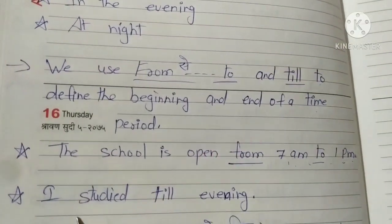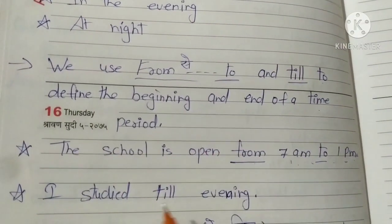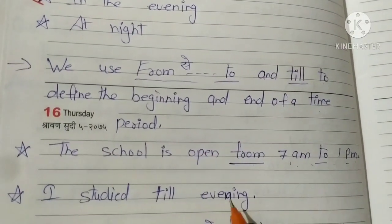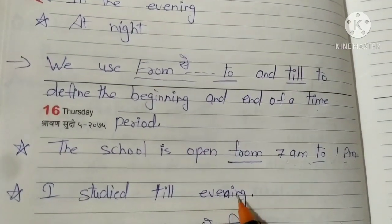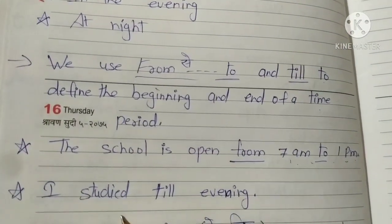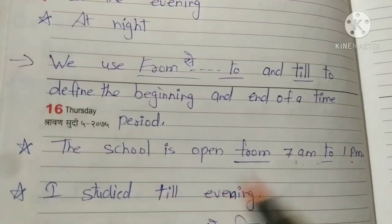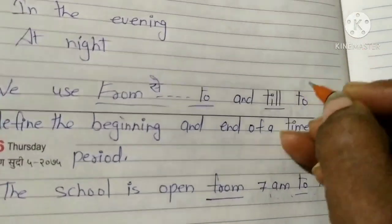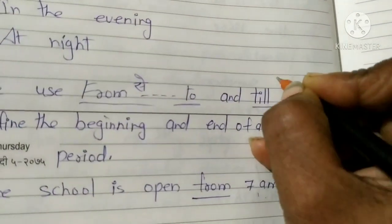And how do we use 'till'? For example: 'I studied till evening' — meaning 'main shaam tak padhta raha'. 'Till' means 'tak' — up until a certain point.